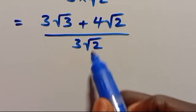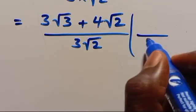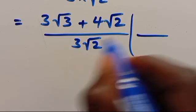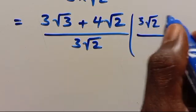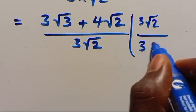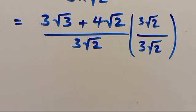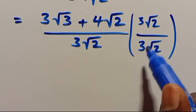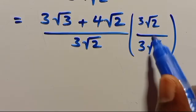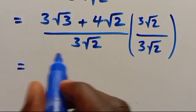We are going to rationalize this — that's what we mean by conjugate. So to conjugate this, meaning we are going to multiply by root 2 at the top here, and also multiply by root 2 at the bottom. Root 2 divided by root 2 will be 1, so it has nothing to do with the value of the expression.